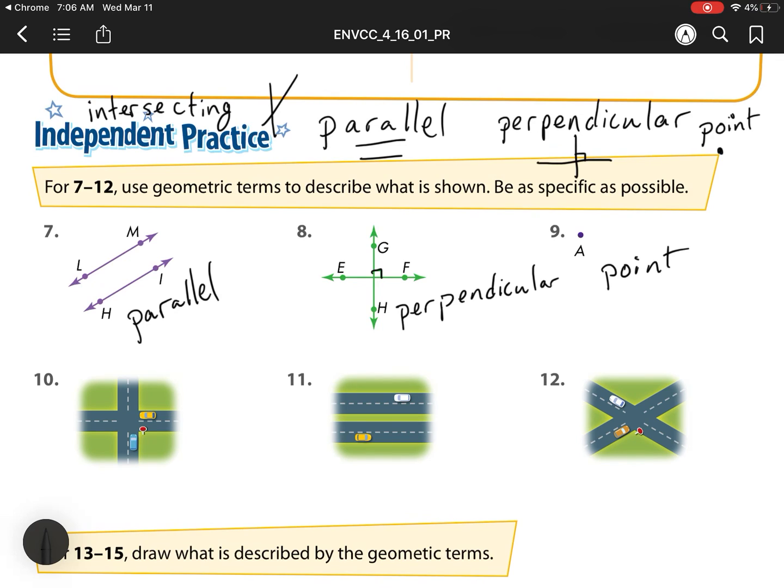Number nine is we have a point, because it is a single dot. For number 10, I notice that these are all right angles, so that must mean these are perpendicular as well. Now what do we have for 11? Well, those are two lines that never touch. They go on forever, these roads. So they are parallel. And then this last one, these aren't quite 90-degree angles, so they're not perpendicular, so they're just intersecting.